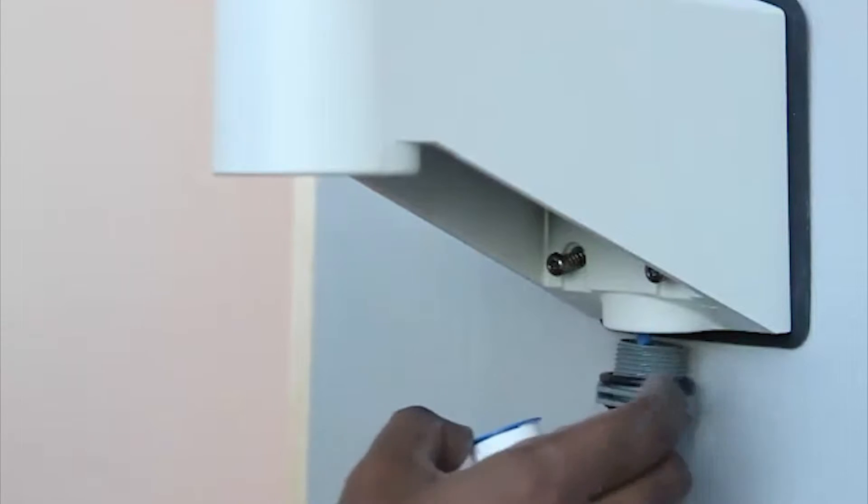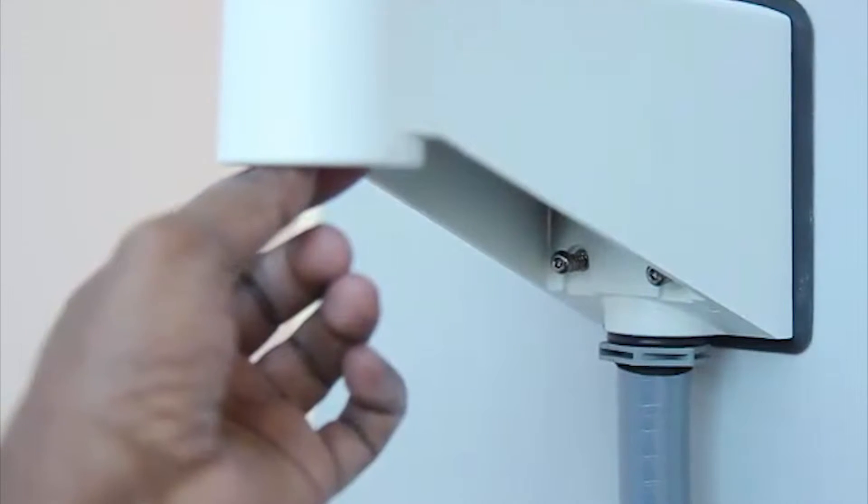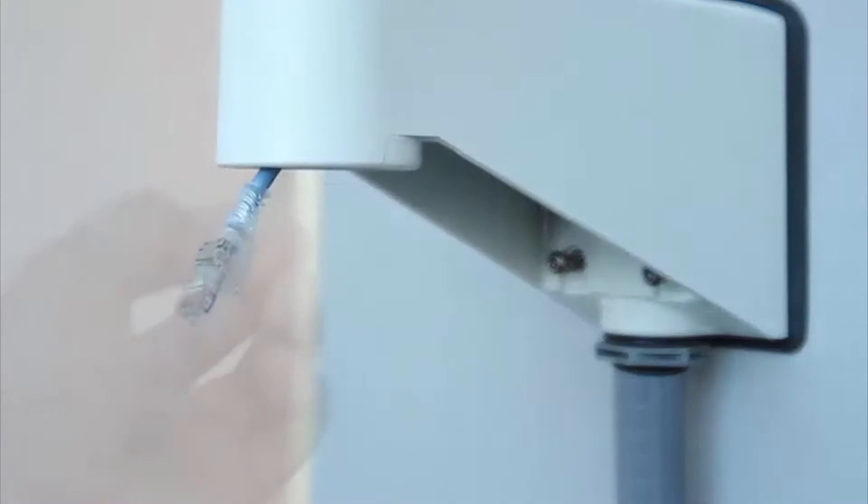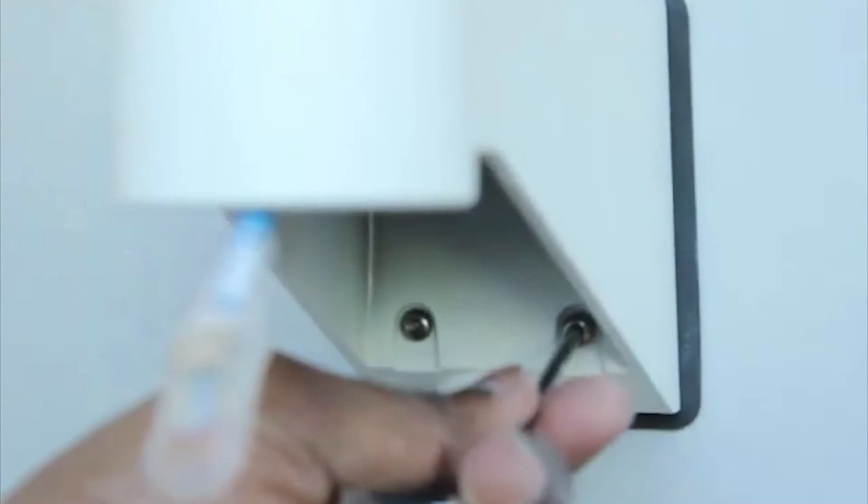Next, apply thread seal tape to the pipe conduit and screw it into the pipe entry hole. Tighten the wall mount screws to secure the wall mount to the bracket.